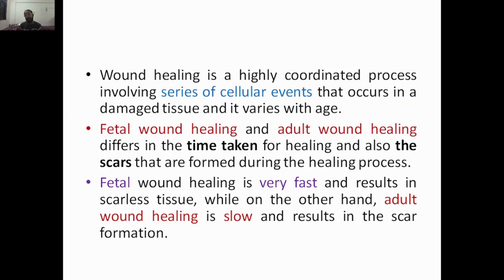We know the Hayflick limit: every cell in our body can undergo division only 30 to 50 times. So once you have aged to 70 or 80, some cells are lost and their activity and properties are diminished, meaning wound healing will take more time than at a younger age. That is why wound healing is a highly coordinated process involving cellular events that differ across age groups.